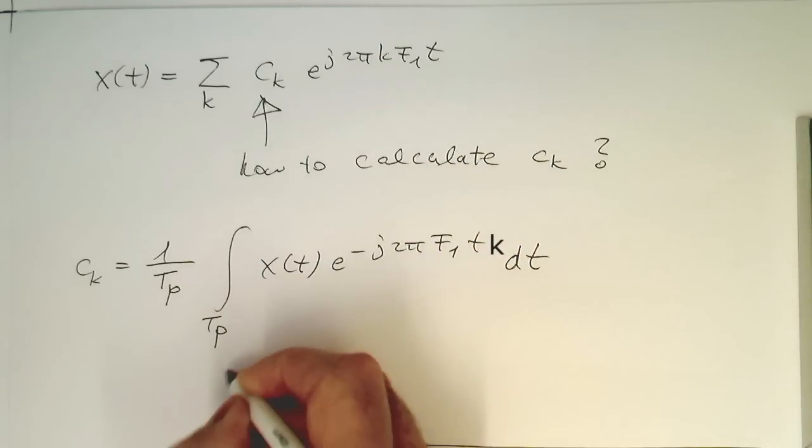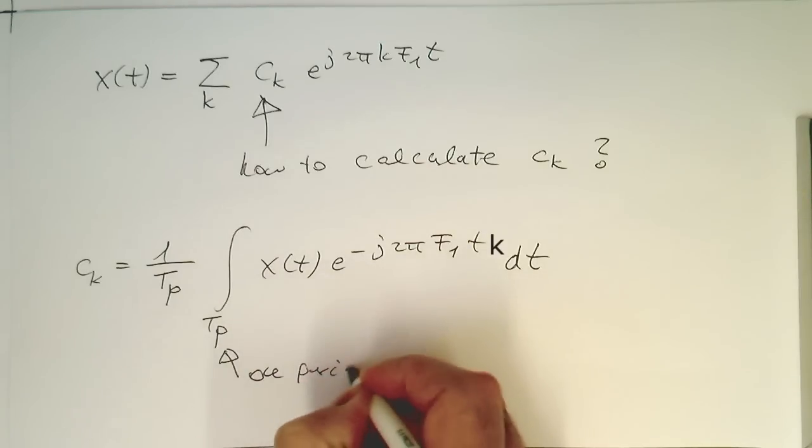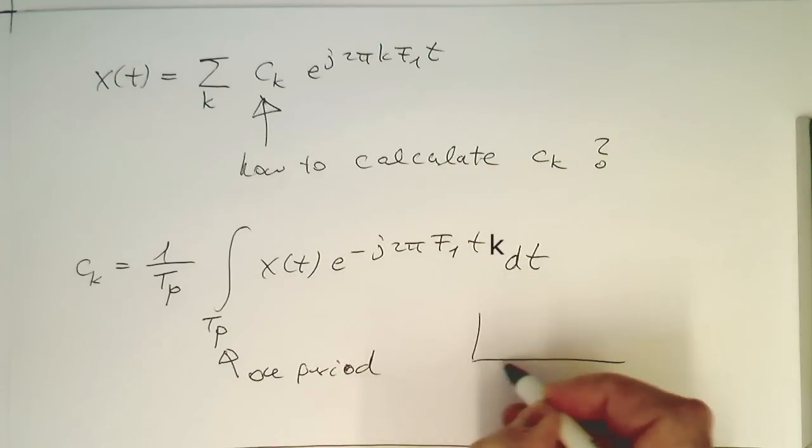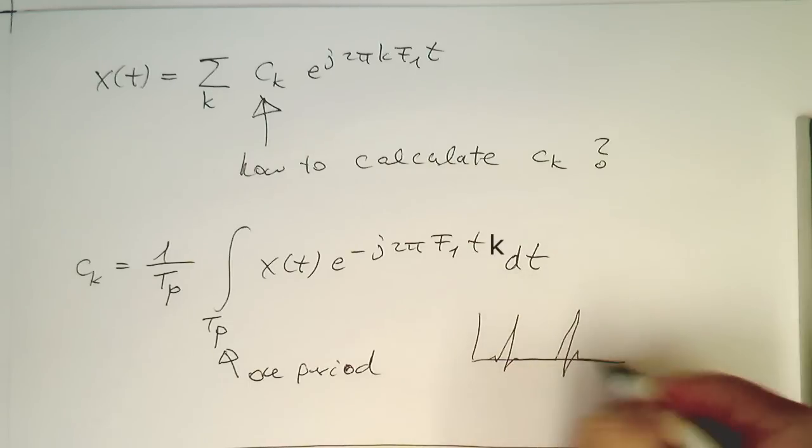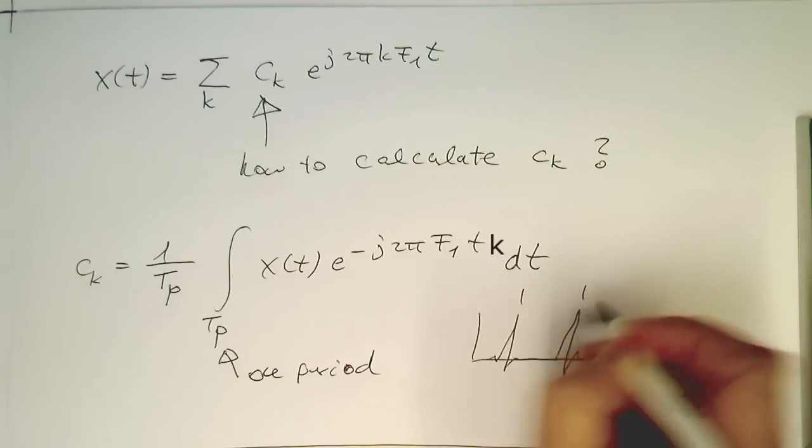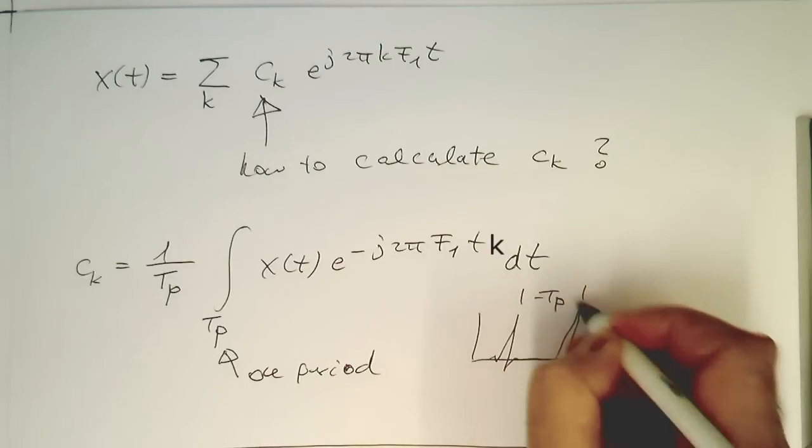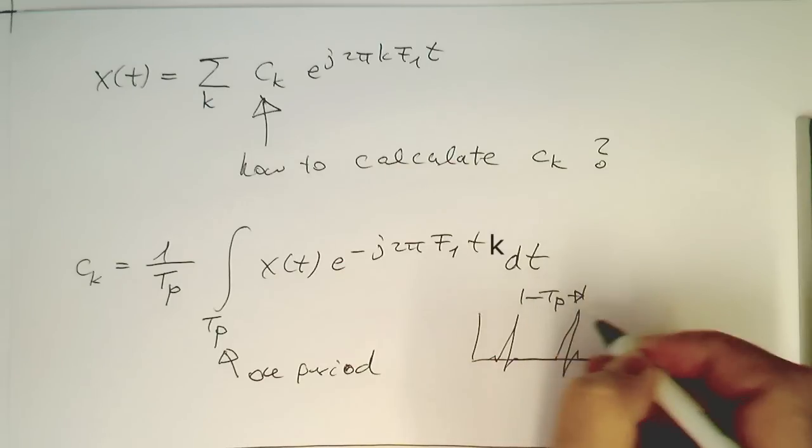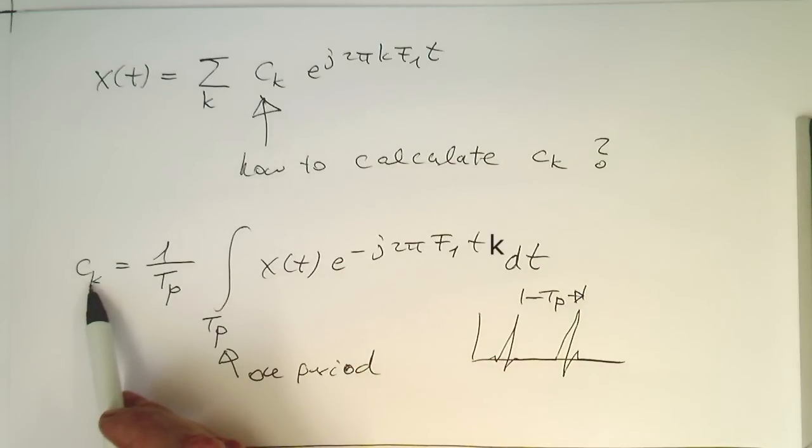So this tp here is one period. If you think again of our heartbeat here, then this tp, this is here our tp for one period here. So we're integrating over this and then we are getting our ck's here.